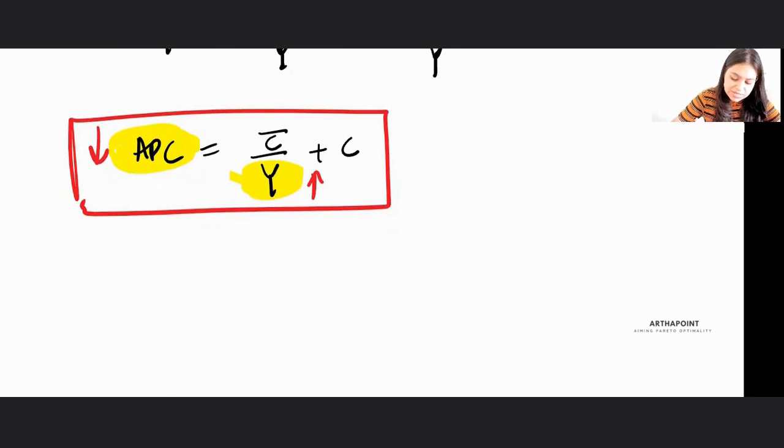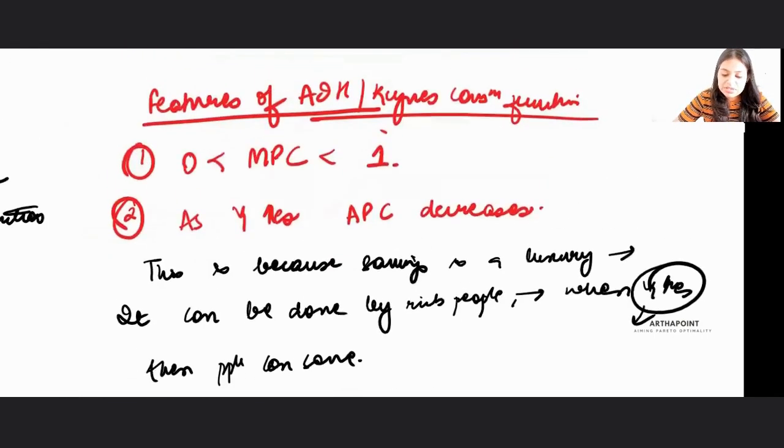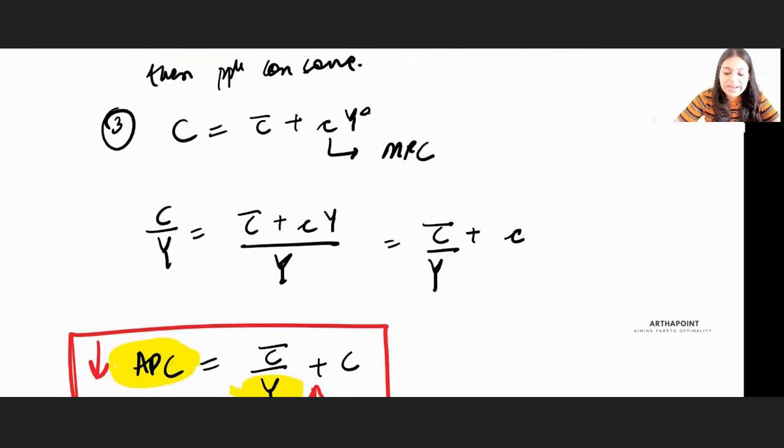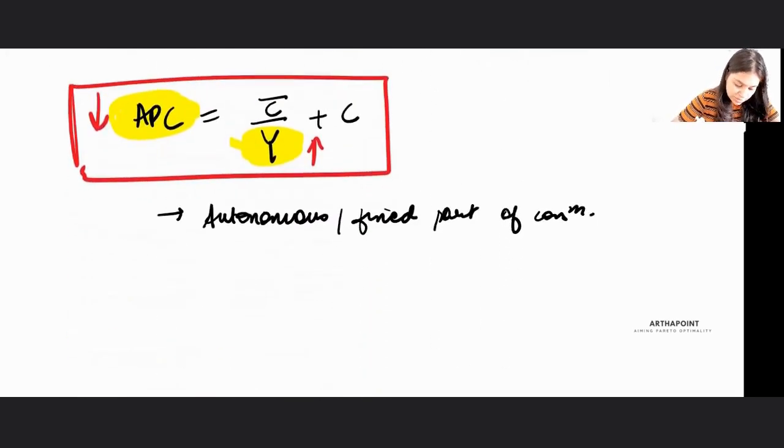Just some assumptions. We have some autonomous fixed part of consumption. So there will be consumption even when my income is 0. Even when Y is 0 or YD is 0, then also I will consume some proportion. So there will be autonomous part of the consumption.